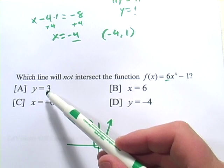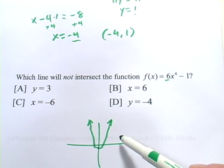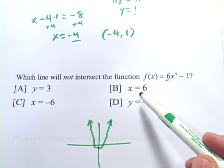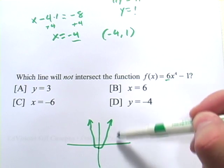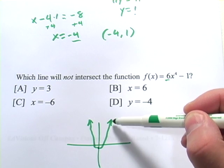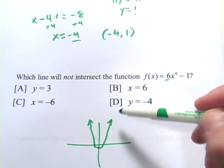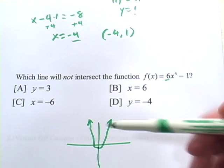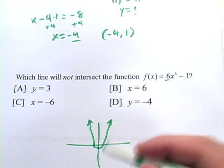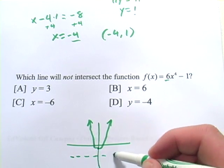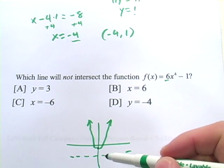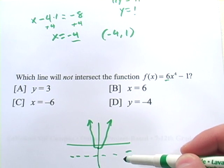And then we have all these lines. y equals 3 would cut across like this. That definitely intersects it. x equals 6, well, maybe that's somewhere out here, but eventually this wing of the function is going to cross that. Same with x equals negative 6, and then here we've got y equals negative 4, which is this line down here. And as you can see, it's never going to cross this function the way I've drawn it.